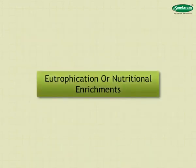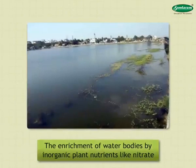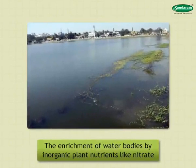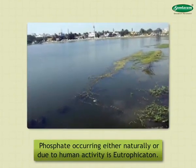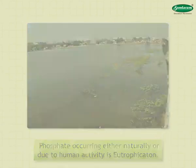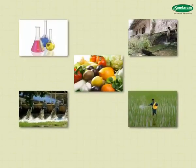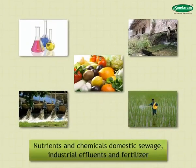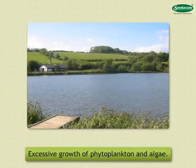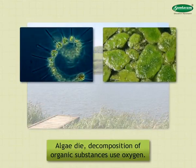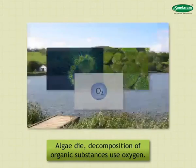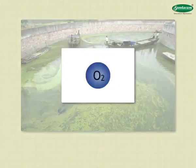Eutrophication or Nutritional Enrichment: The enrichment of water bodies by inorganic plant nutrients like nitrate and phosphate, occurring either naturally or due to human activity, is eutrophication. This process takes place due to the introduction of nutrients and chemicals through discharge of domestic sewage, industrial effluents and fertilizer from agricultural fields. These promote excessive growth of phytoplankton and algae. When algae die, decomposition of organic substances uses oxygen, resulting in depletion of oxygen in water.